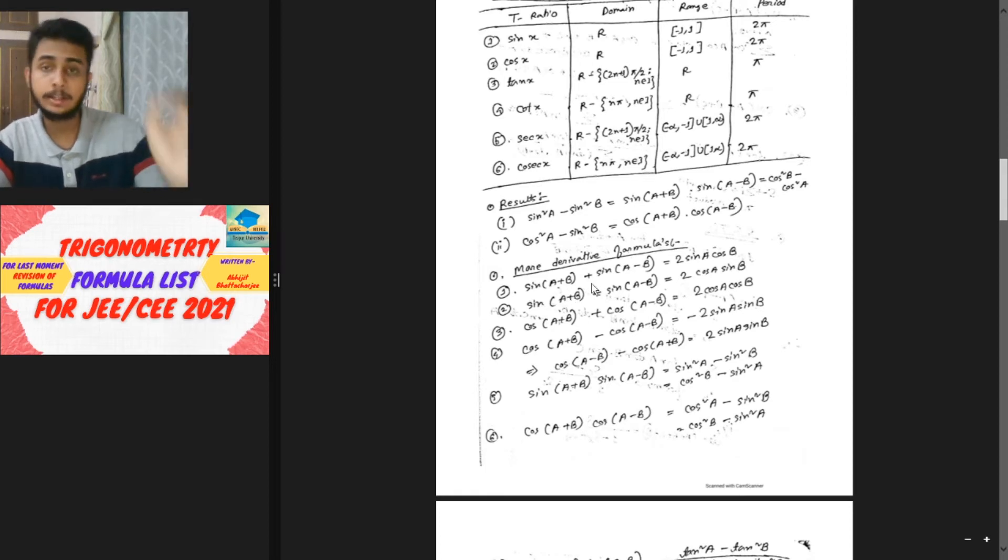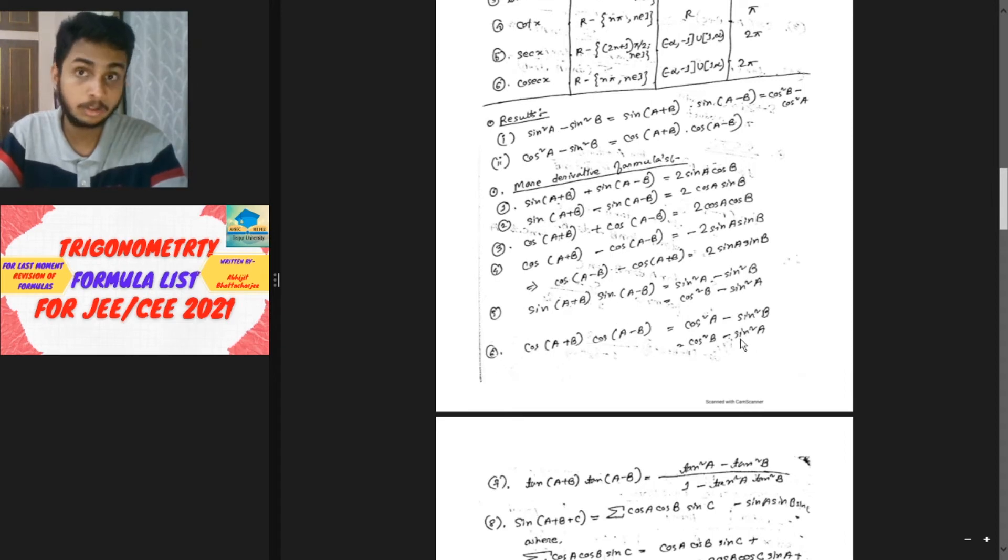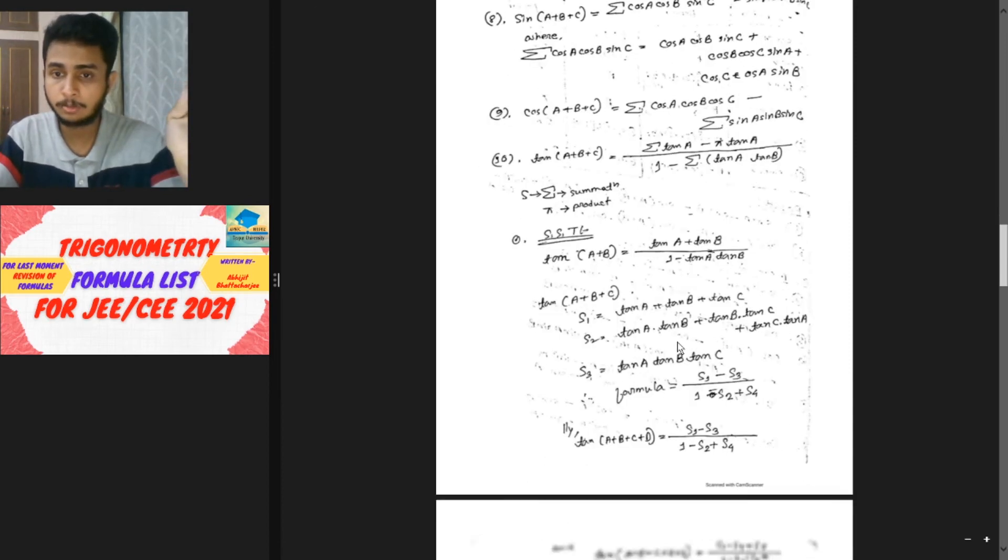Then I have sin(a+b), sin(a-b) type formulas. Their proofs are important for board exams and class 11, 12 exams. You need to just remember the formulas for numerical questions. Then tan(a+b) times tan(a-b) type formulas.